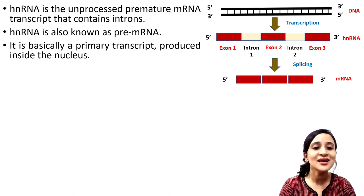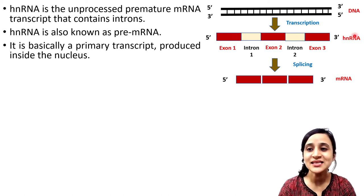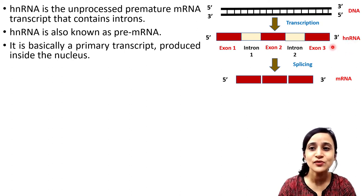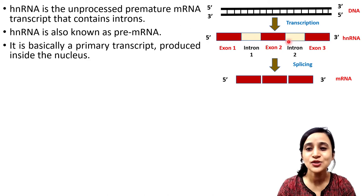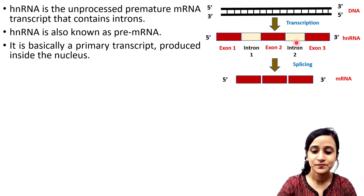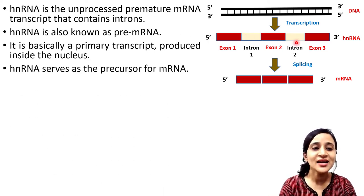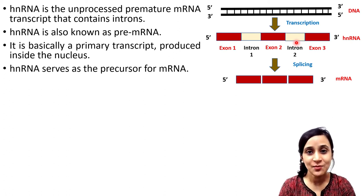hnRNA is produced inside the nucleus. As you can see here, this is hnRNA — it is the primary transcript produced from this gene, and it contains three exons and two introns. hnRNA serves as the precursor for mRNA, because mRNA is produced from hnRNA.